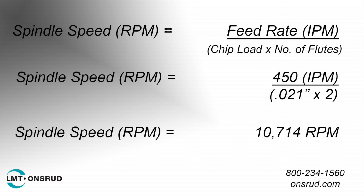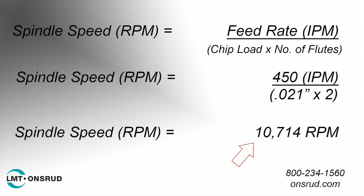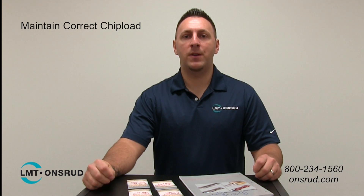Now let's do the same for the 0.021 chip load. Speed equals 450 divided by 0.021 times 2, which is 450 divided by 0.042, and in this case speed equals 10,714 RPM. In order to maintain a 0.021 chip load and run at 450 inches per minute, your spindle speed needs to be adjusted to 10,714 RPM. The most important thing to remember is to maintain the correct chip load. Thank you for watching our video presentation and have a great day.